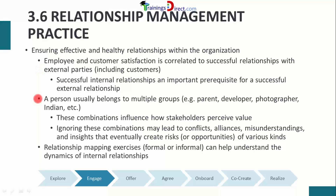A person usually belongs to multiple groups — the same person could be a parent, a developer, a photographer, Indian, and so on. This combination influences how stakeholders perceive value. While one stakeholder could be a developer, photographer, and Indian, another could be a parent in addition to those. Ignoring these combinations may lead to conflicts, alliances, misunderstandings, and insights that eventually create risks or opportunities of various kinds.